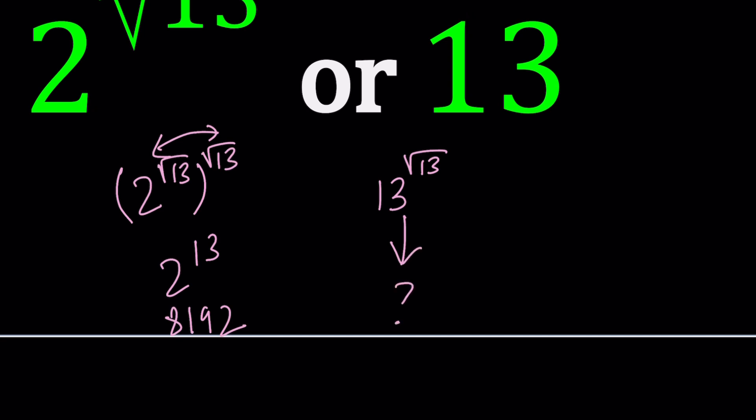But what about this one, right? How do you simplify something like this or compare it to 8,192? So, does this help? Probably not.